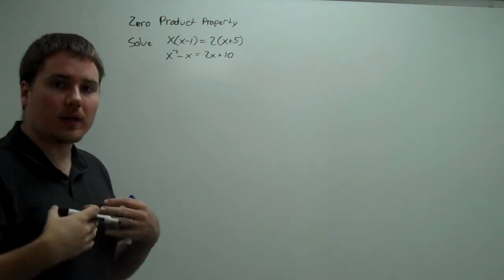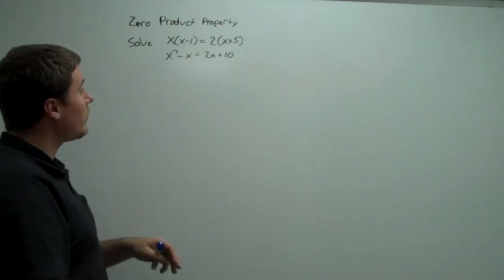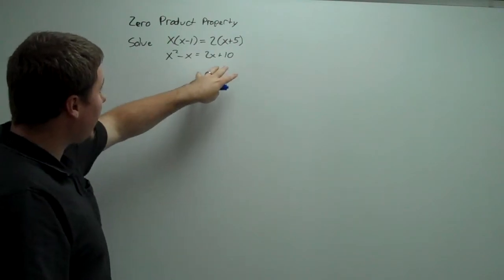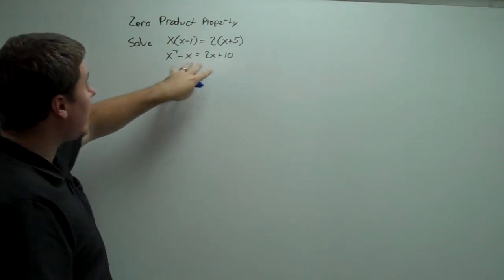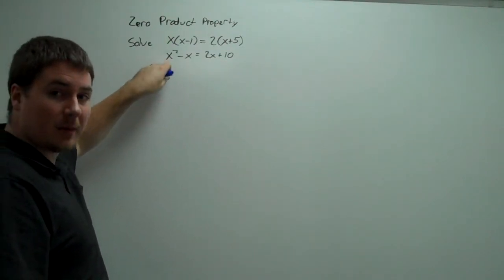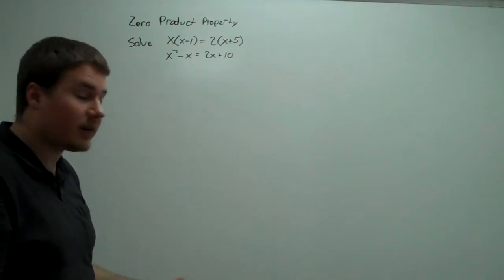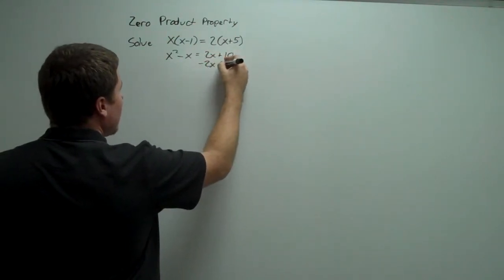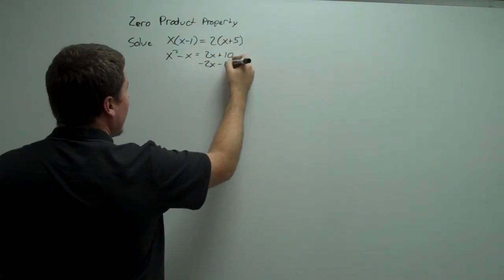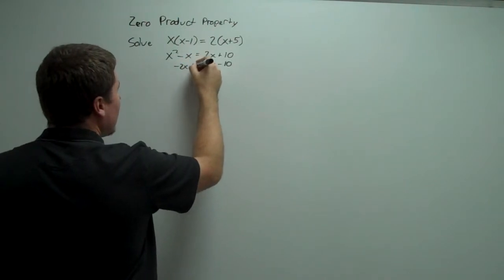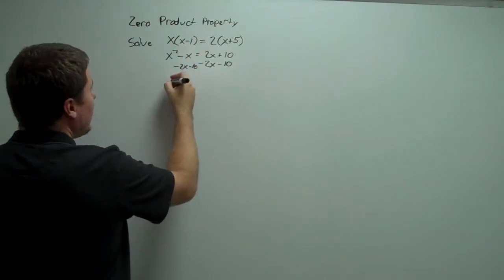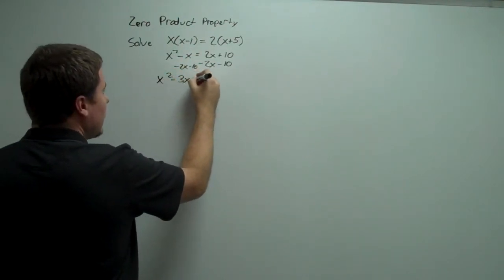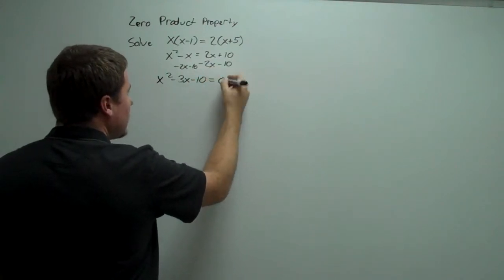We want to move this all to one side so that we have it equal to 0. We could move it to the left or to the right. Moving it to the left is going to be a little bit better because then you keep the x squared term positive, which makes factoring easy. So we subtract 2x and we subtract 10, and we get x squared minus 3x minus 10 equals 0.